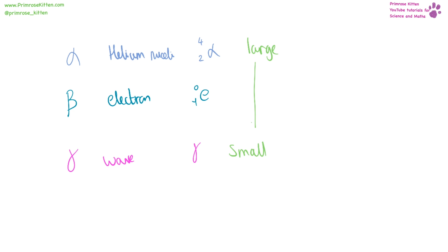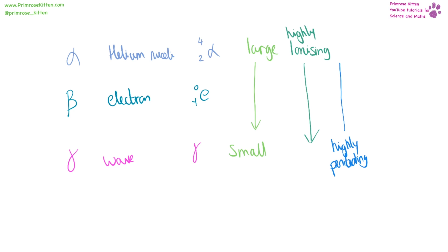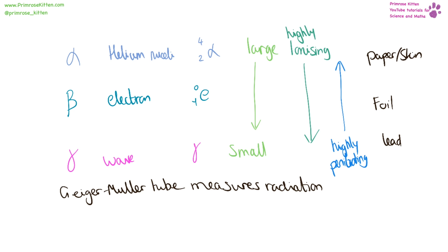Alpha radiation is very large whereas gamma radiation is very small. Alpha is highly ionising whereas gamma is not — ionising means how good it is at knocking electrons off atoms, turning them into ions. Gamma is highly penetrating whereas alpha is not. A sheet of paper or skin will stop alpha radiation; aluminium foil will stop beta; thick lead is needed to stop gamma. A Geiger-Müller tube measures radiation and clicks for each detection. The unit for radiation is the Becquerel.